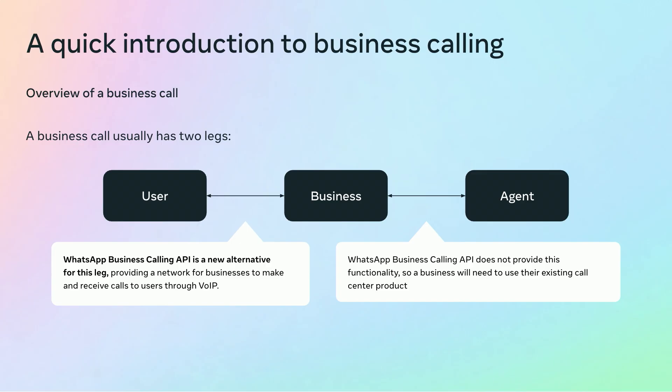A business call usually has two legs: from the user to the business, and from the business to the agent who will talk with the user. The first leg usually runs on the public switched telephone network (PSTN), while the second leg usually runs on voice over internet protocol (VoIP). The WhatsApp Business Calling API is a new alternative for the leg between the user and the business. For the leg between the business and the agent, a contact center is typically used to distribute the call, and the API does not provide such functionality, so businesses will need to use their existing distribution product.